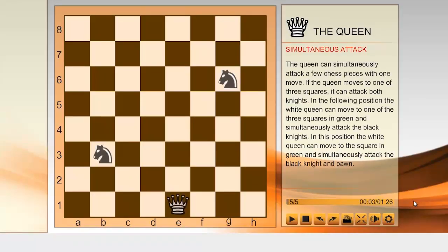Simultaneous attack. The queen can simultaneously attack a few chess pieces with one move. If the queen moves to one of three squares, it can attack both knights.